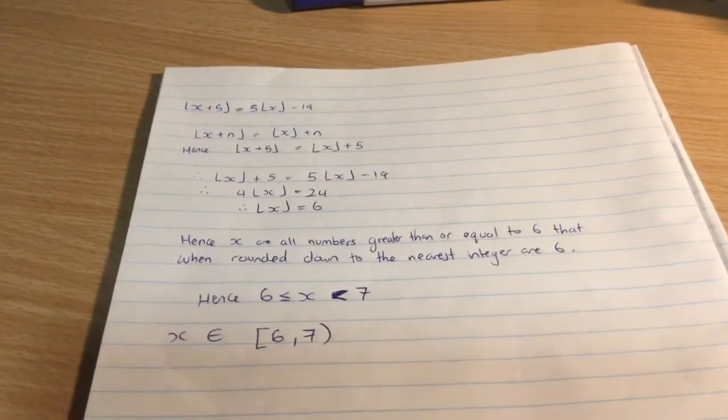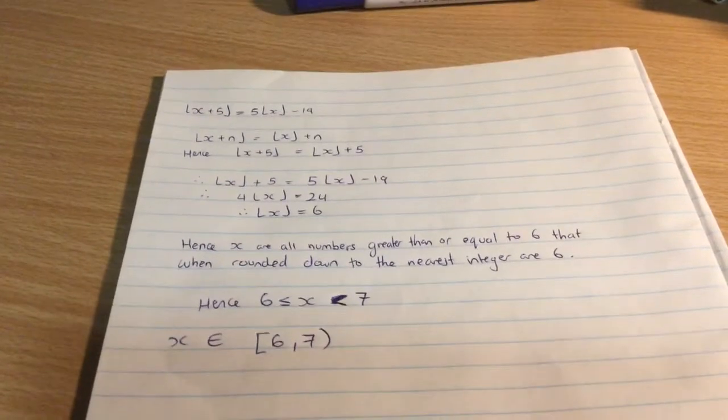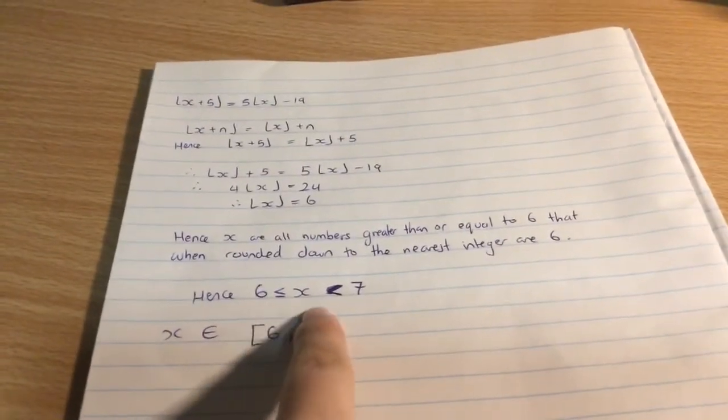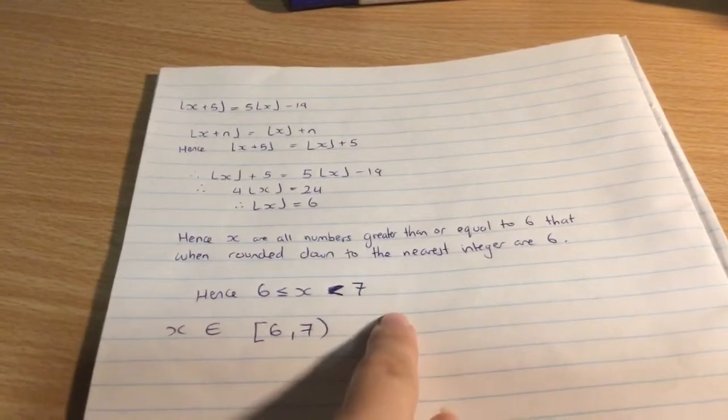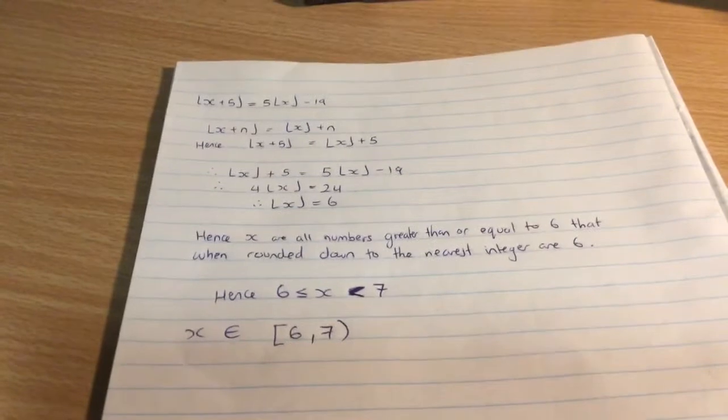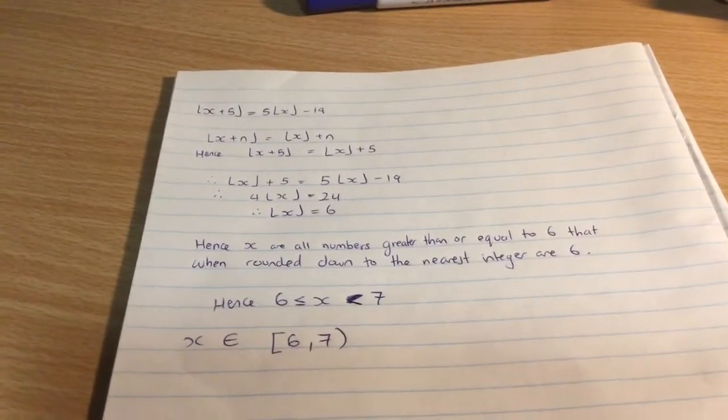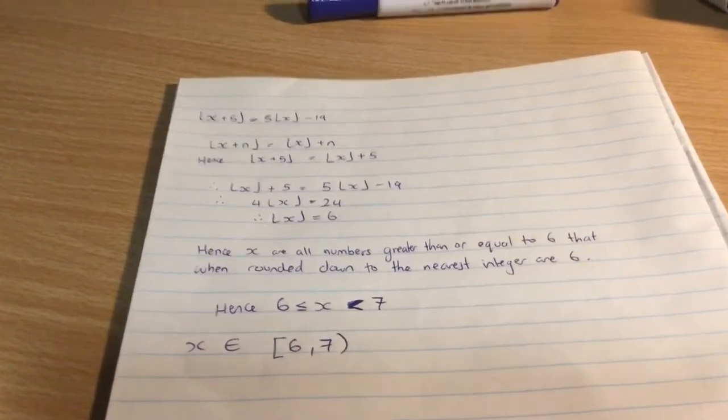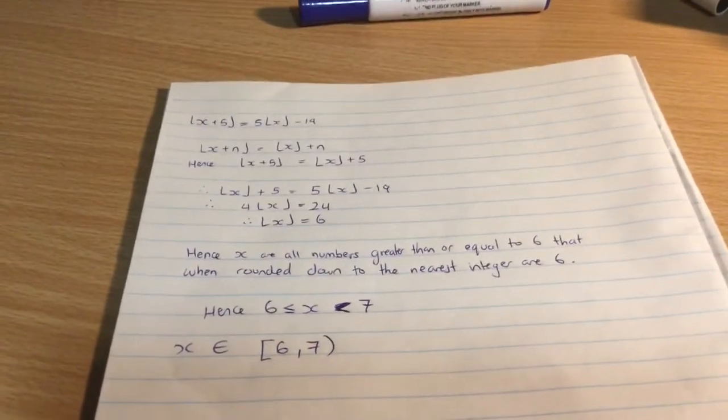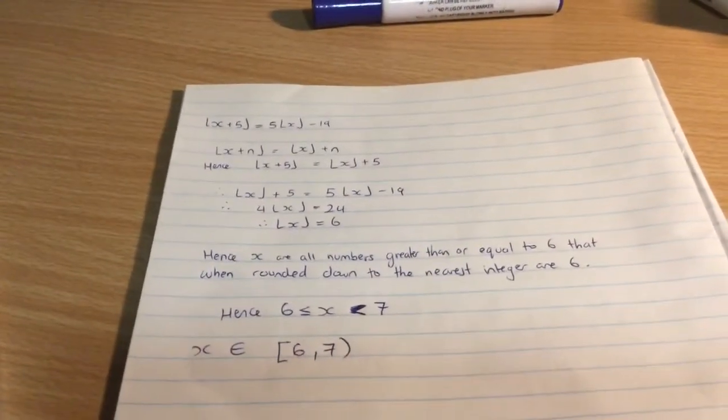And what we get out of that is that x can be... What we essentially get here is that 6 is less than or equal to x is less than 7. And when we write this in interval notation we say well x belongs to an interval which is inclusive of 6 but does not include 7 as the upper limit.